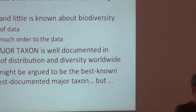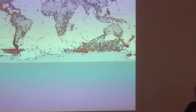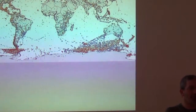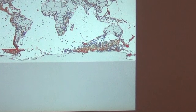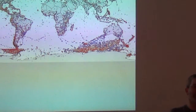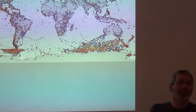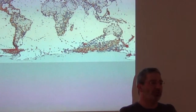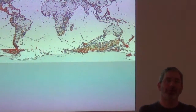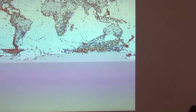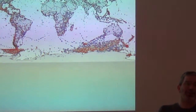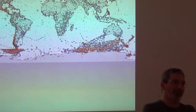Birds might be the best documented taxon worldwide, but this is a view of digital accessible knowledge of birds as of October 2010. Australia fills in quite a bit with the appearance of the Atlas of Living Australia. The US actually looks pretty bad because a lot of big observational datasets like the breeding bird survey have not been integrated — the data are digital and shared but not integrated into the global whole.